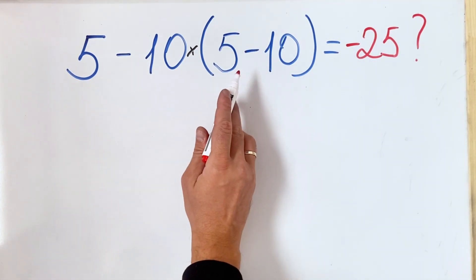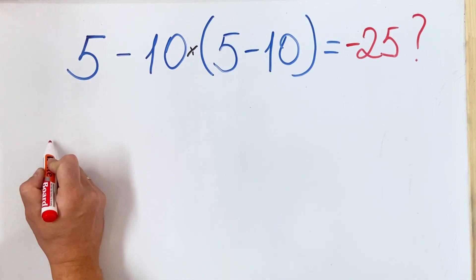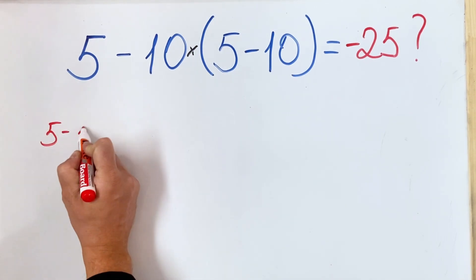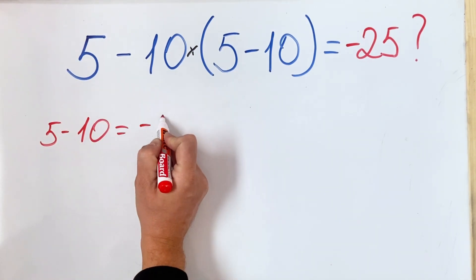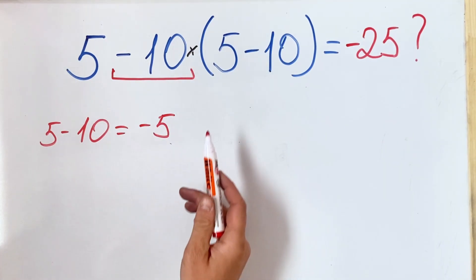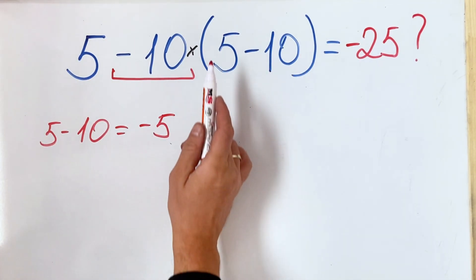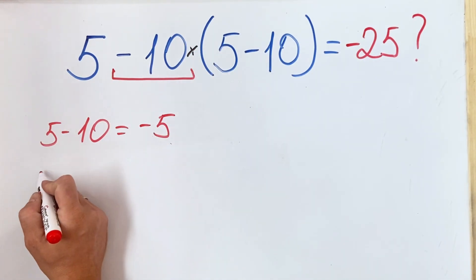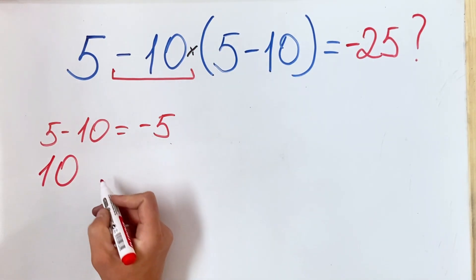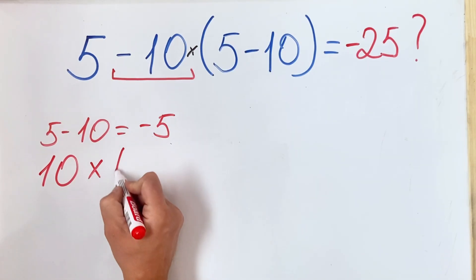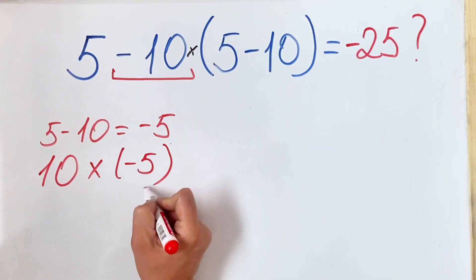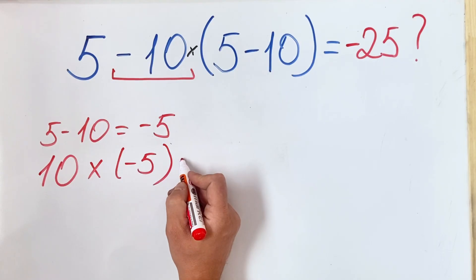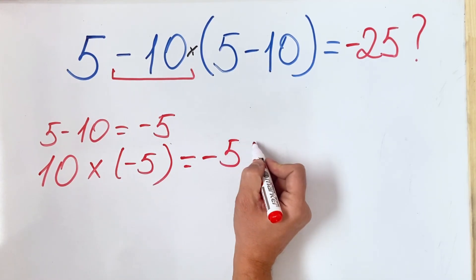In this case, we first do what's inside the parentheses, so we have 5 minus 10 equals minus 5. Now that we solved what's inside the parentheses, the next one is to solve the multiplication. We have 10 multiply by minus 5, which equals to minus 50.